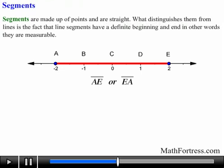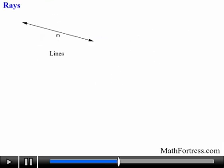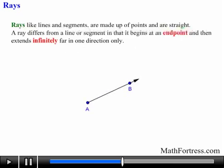So we learned about lines which extend forever and ever in both directions, and we learned about segments which have a definite length and do not go on forever and ever. Is it possible to create a figure that contains both of these characteristics? The answer is yes. These hybrids are called rays. Rays, like lines and segments, are made up of points and are straight.